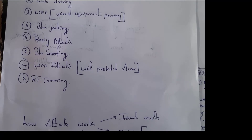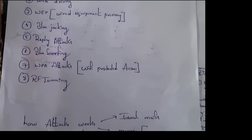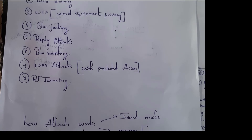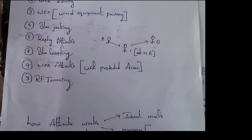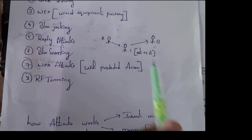This one is bluejacking. The name itself says sending messages through Bluetooth. In this, the attacker sends malicious messages by using Bluetooth in order to hack the person. Next one is replay attacks. In this example, there is a user A, and this person is a hacker.